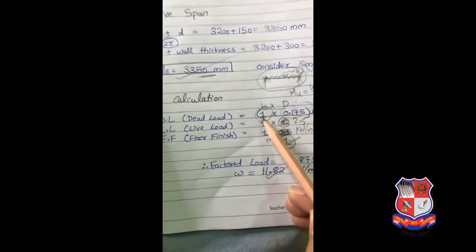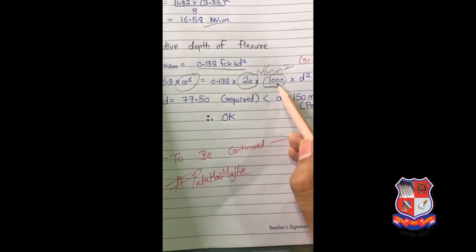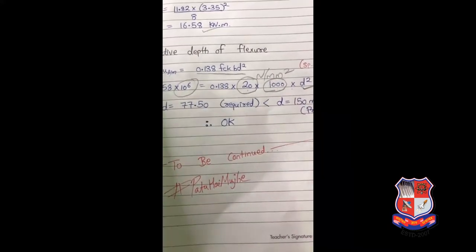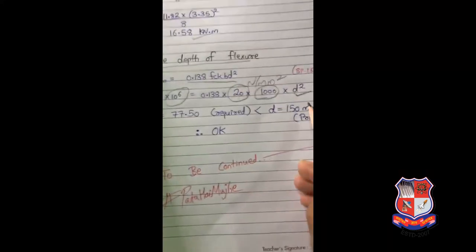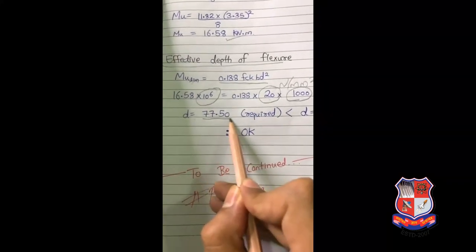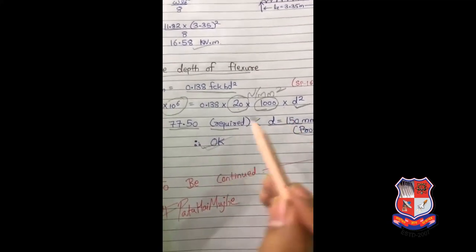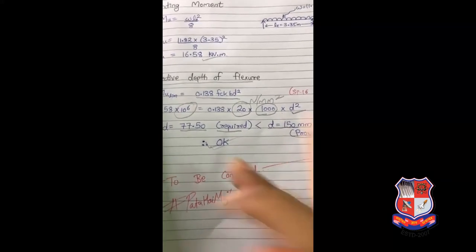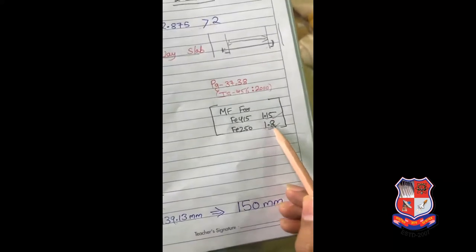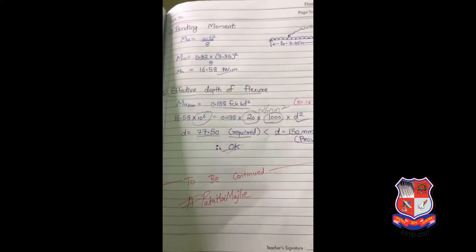After solving, D_required = 77.5 mm and we have provided D = 150 mm. Since 150 > 77.5, it is okay. If the provided D were insufficient, you would need to go back and change the modification factor and recalculate D. That's why it's important to remember MF = 1.15 for Fe 415 and 1.8 for Fe 250 - all answers will come out correctly. We stop here for now; the remaining steps - main steel, distribution steel, and checks - will be covered in the next lecture. To be continued. Thank you.